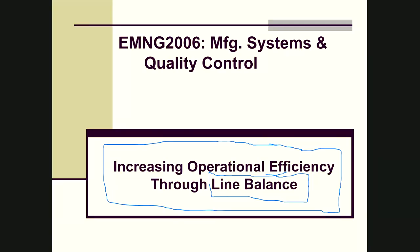Just to reiterate quickly, this unit is on increasing operational efficiencies through a practice that in industry we call line balancing. The first several slides are very basic slides to help you understand the generic concept of line balancing and how we can increase efficiency by being cognizant of some very fundamental line balancing approaches.